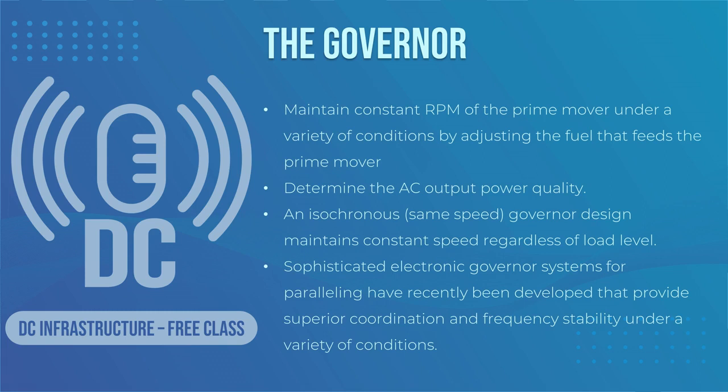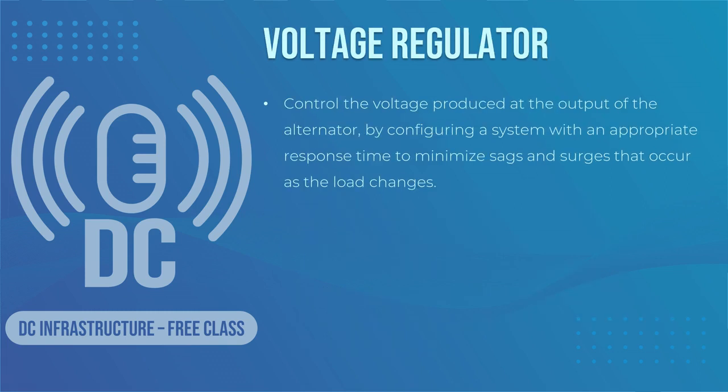Sophisticated electronic governor systems for paralleling have recently been developed, providing superior coordination and frequency stability. These advances are a welcome enhancement to the high availability requirements of today's data centers due to their reliability, reduced maintenance, and coordination efforts. There are a lot of non-linear loads in data centers. Non-linear loads draw current in a manner that is inconsistent with the voltage waveform and can interact negatively with a generator system, jeopardizing the availability of the critical load during standby operation. That's why we need a voltage regulator — its basic function is to control the voltage produced at the output of the alternator by configuring a system with an appropriate response time to minimize sags and surges that occur as the load changes.